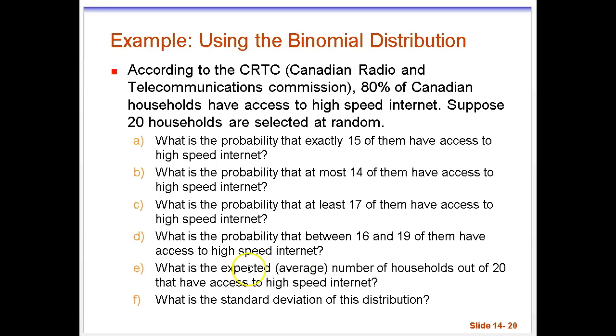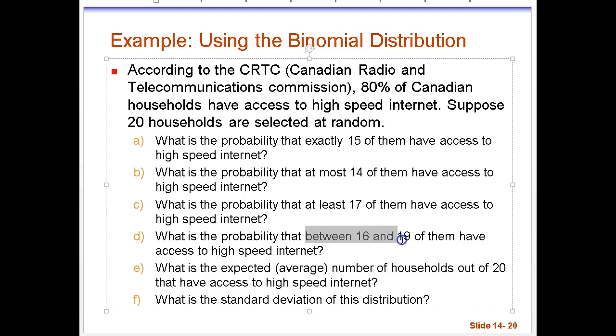In part D of the question we're looking for the probability that between 16 and 19 of these households have access to high-speed Internet.